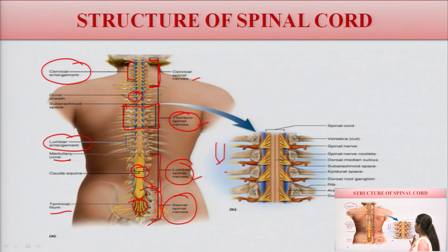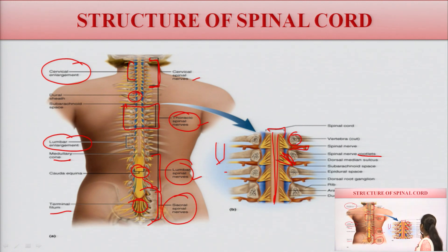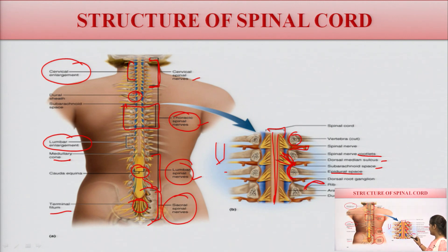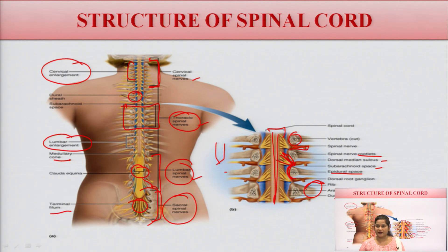If we enlarge the image: this is the spinal cord, these are the vertebrae, these are the spinal nerves and spinal nerve rootlets, and this is the dorsal median sulcus. There is a subdural space and an epidural space. This is the rib, and there is the dura mater — a layered covering of the spinal cord.